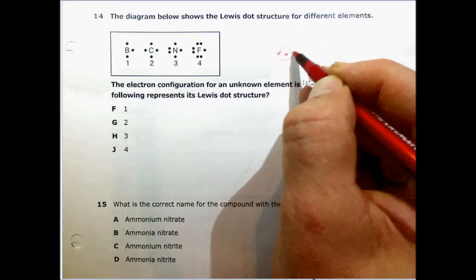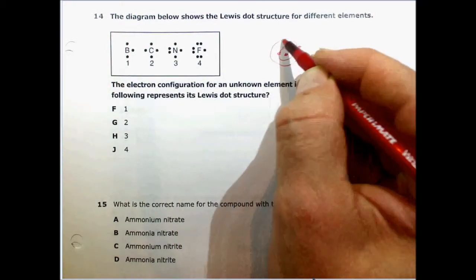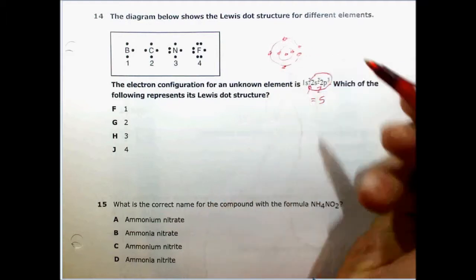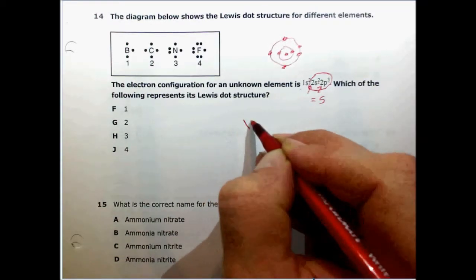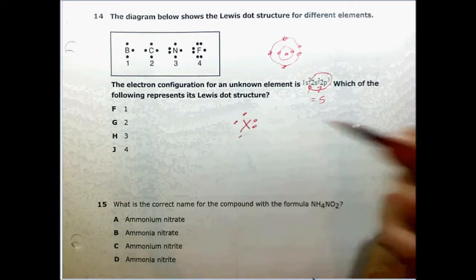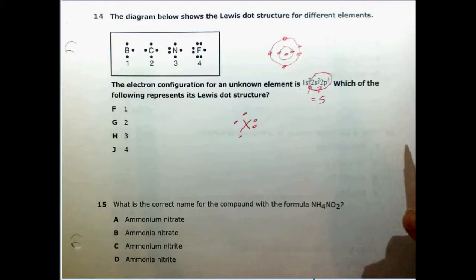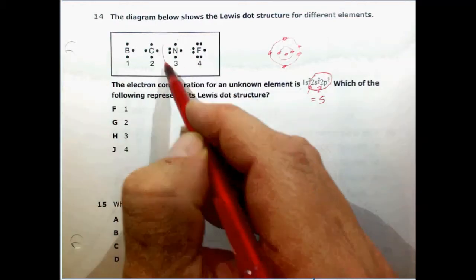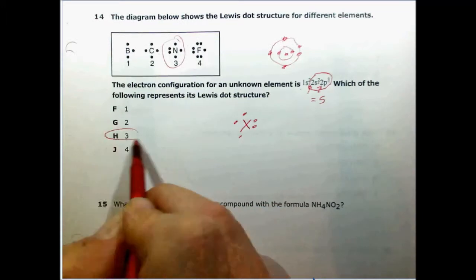We know it's the outer energy level because it's two here. One is the inner energy level which holds two. The outer energy level has got five, so our Lewis dot structure for this unknown element would be something like this with five dots. Where do we see something like this? We see it for nitrogen, which is number three, H.